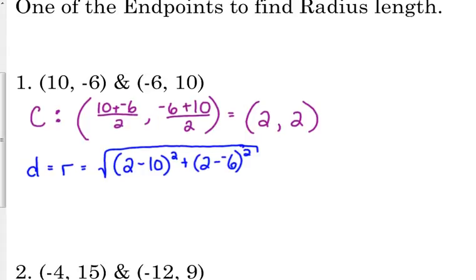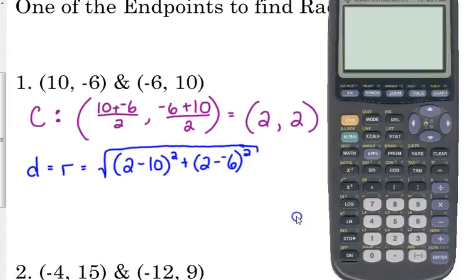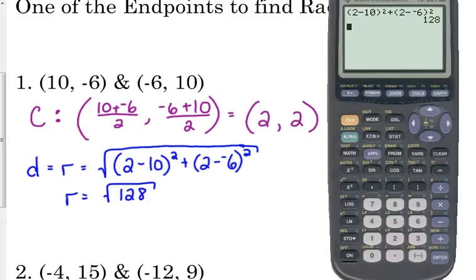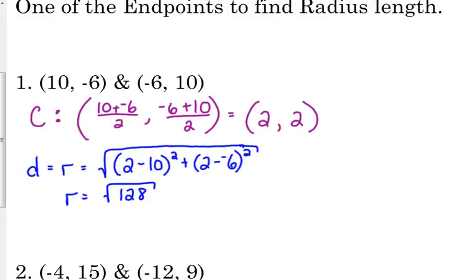So I'm going to do 2 minus 10 squared plus 2 minus negative 6 squared. You can use the other one if you really want to, I just think it's easier to use the same one every time. Put everything in but the square root. 2 minus 10 squared plus 2 minus negative 6 squared gives us 128. R is the square root of 128.